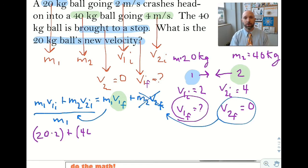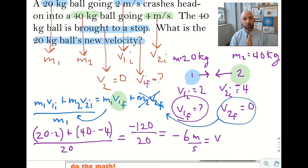We then get 20 times 2 plus 40 times negative 4. We're going to say that it's moving in the negative direction, divided by the mass of the first one, 20. So negative 120 divided by 20 is negative 6 meters per second.